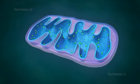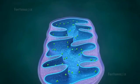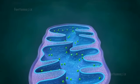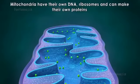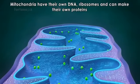Mitochondria are semi-autonomous. They are partially dependent on the cell to replicate and grow. They have their own DNA, ribosomes, and can make their own proteins.